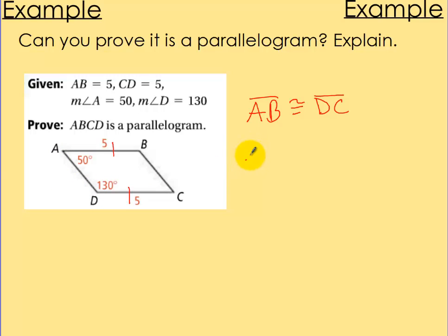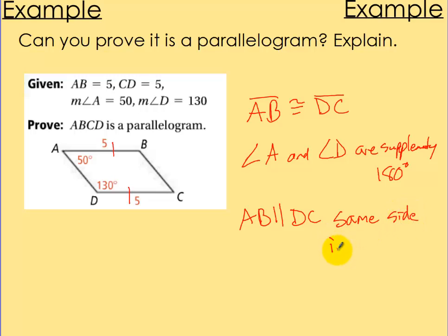we can say angle A and angle D are supplementary because they add up to 180. And if we treated AB as a line and DC as a line and AD as the transversal, we can say AB is parallel to DC because of same side interior angles of a transversal. So because of that, and I have these two properties, it is a parallelogram.